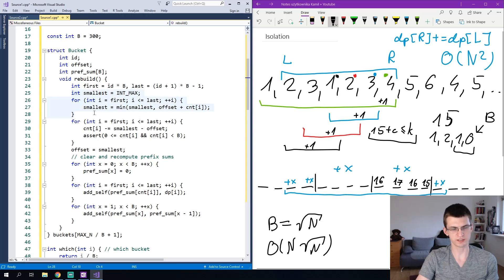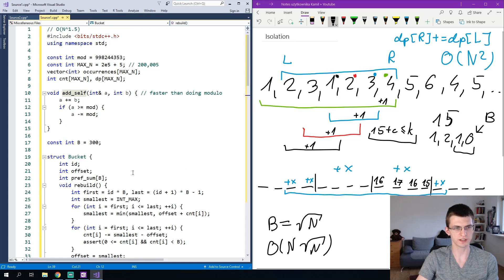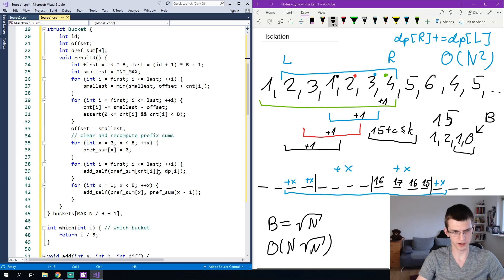Then I look for the smallest number here, so I find minimum over offset plus count of i, count is that small number that was decreased by offset. Then I update counts by decreasing the difference previous offset and my new offset which is smallest and I change the offset. Finally, I want to clear the array for prefix sums and recompute those. So just addSelf is a function that adds a plus equal to b. It avoids using modulo because modulo is slow. So we can do that with an if. AddSelf adds prefsum of count of i plus equal to dp of i so that prefsum will store eventually after applying prefix sums here the sum of dp of numbers with count of i up to this value.